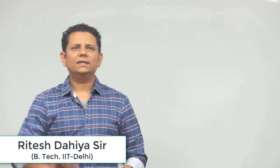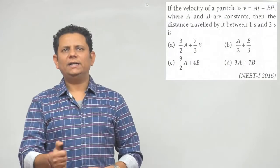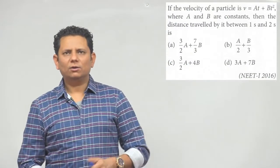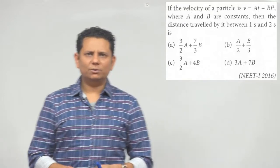Question 1216 says if the velocity of a particle v is given as At plus Bt square, where A and B are constants, then the distance traveled between 1 second and 2 seconds will be. Four options are given.